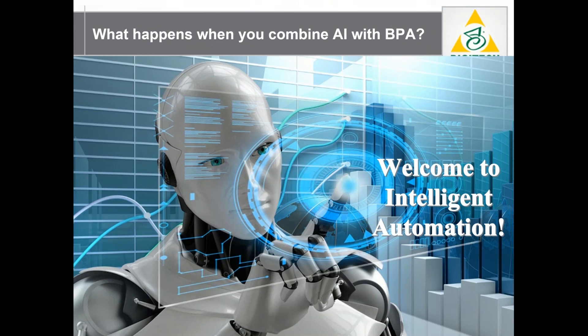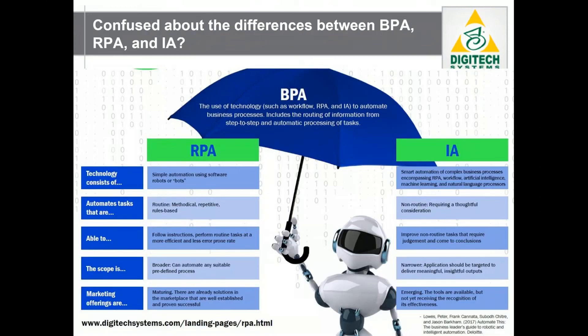How are BPA, RPA, and IA different? Remember that BPA — business process automation — is the umbrella term for a class of technology tools that help organizations automate processes. RPA, or robotic process automation, describes the use of electronic user accounts called bots or robots that are used to perform tasks previously done by humans. And IA — intelligent automation — describes the use of artificial intelligence tools to achieve BPA goals.